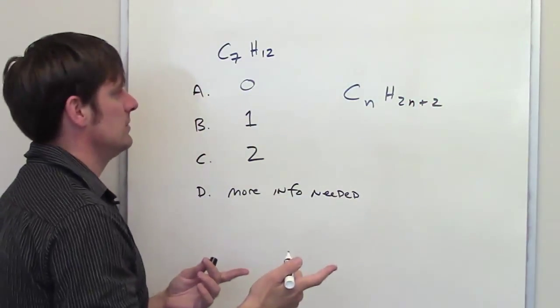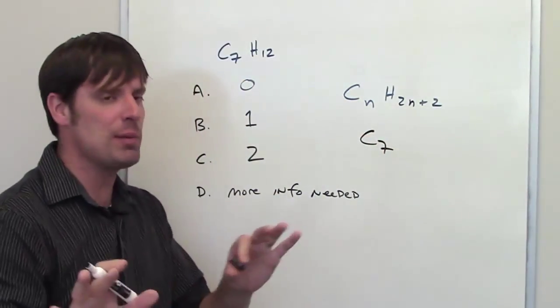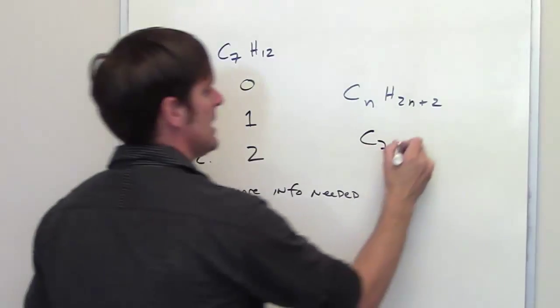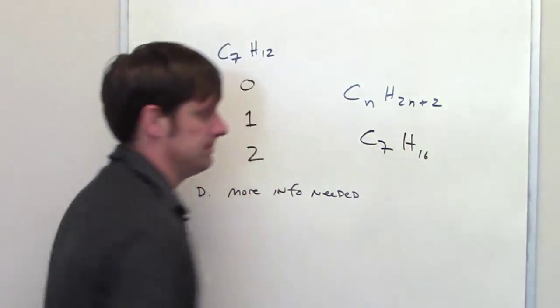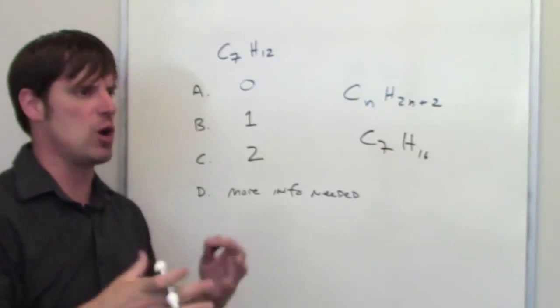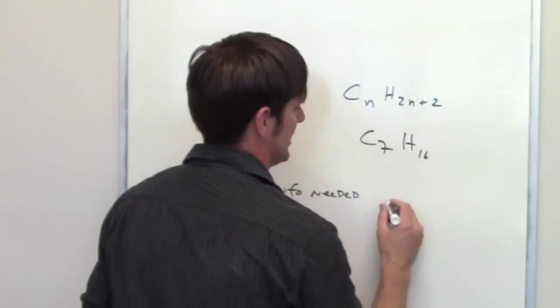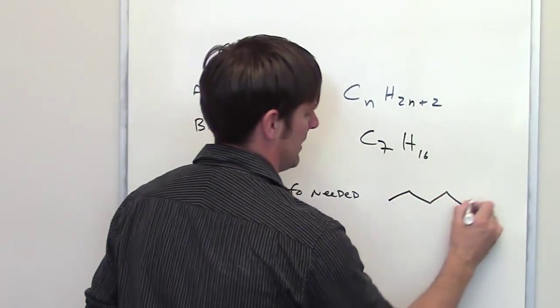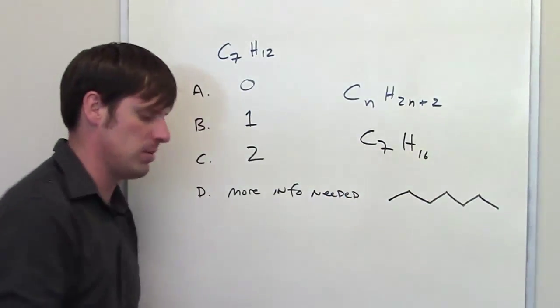What that means is that if I had 7 carbons in a boring alkane, no double bonds, no rings, its formula would be C7H16. Now, if you don't believe me, you can actually draw it out and count how many carbons and how many hydrogens you have. I'm going to go ahead and draw a skeleton structure for that. 1, 2, 3, 4, 5, 6, 7. And if you look at that closely and draw out all the hydrogens and carbons, you'll see that it indeed does have that formula.